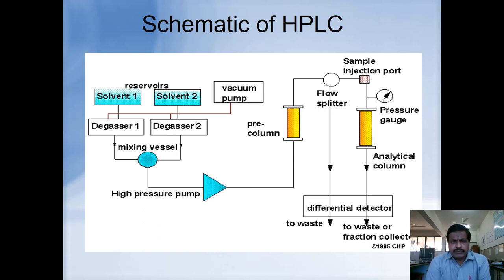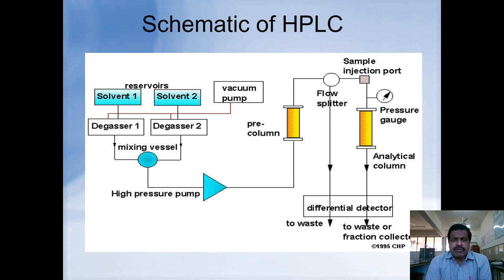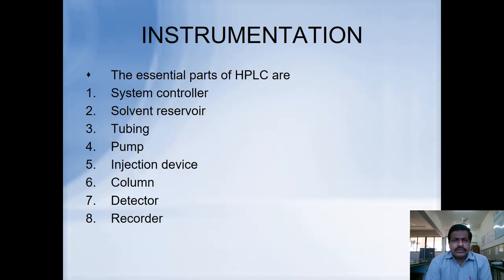HPLC has some advantages over other chromatography techniques. To name a few: one is resolution, which is very important; second is the sample requirement, which is at the microgram level. It has a number of applications, and this schematic diagram displays the main components of the instrument.